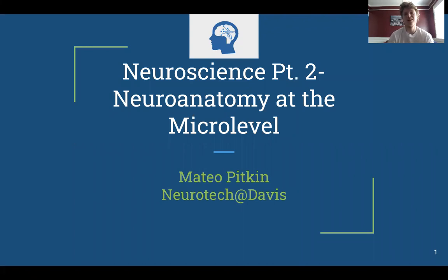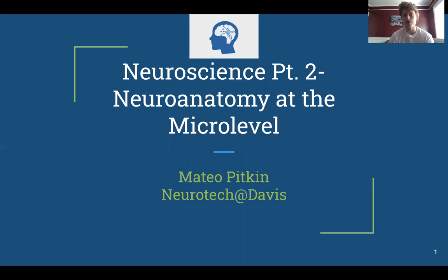Hello everyone. This is week two for the Intro to Neurotechnology Crash Course. We're going to be looking at neuroanatomy at the micro level this week, which will consist of basic anatomy of the neuron, how an action potential works, and we'll also look at neurochemistry — basically how various neurotransmitters interact with our nervous system. We're building off of what Cashaw was doing last week at the larger scope of the nervous system.